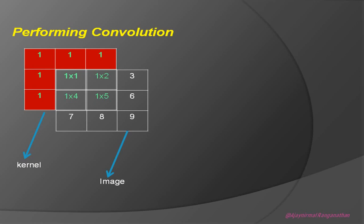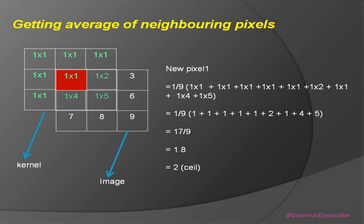We multiply one with one, one with two, one with four, and one with five, because that part of the window overlaps with the image. The rest of the rows and columns don't go inside the image, so we don't have any values there. What we do is take all those missing positions to be one, so the window becomes a series of one-cross-one multiplications plus one-cross-two, one-cross-four, and one-cross-five.